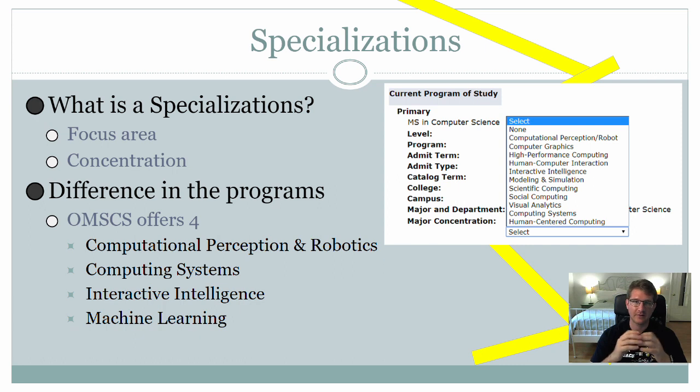For the OMSCS program, there's four specializations offered: Computational Perception and Robotics, Computing Systems, Interactive Intelligence, and Machine Learning, which is my chosen specialization. If you are an on-campus student, you actually have a lot more options for specializations within the computer science masters. That's what you can see in the image over on the right.